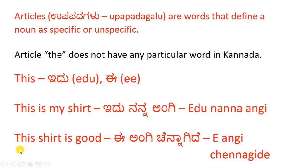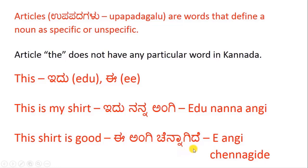Another example: 'This shirt is good' — Ee angi chennagide. Angi is shirt, good is chennagide. In this case, 'this' is 'ee.'